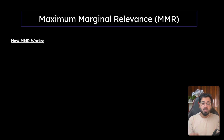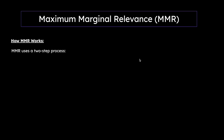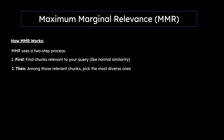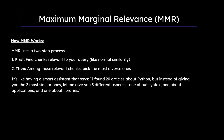So let's see how MMR works. MMR uses a two-step process. First, it finds chunks relevant to your query, like normal similarity. Then, among those relevant chunks, it picks the most diverse ones. It's like having a smart assistant that says: 'I found 20 articles about Python, but instead of giving you the three most similar ones, let me give you three different aspects — one about syntax, one about applications, and one about libraries.'